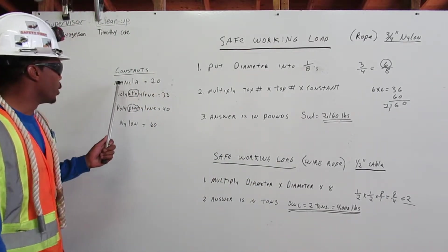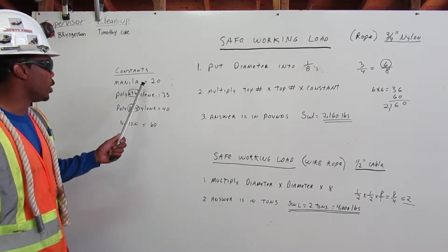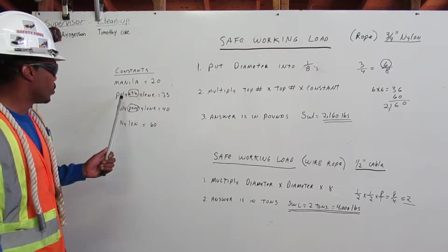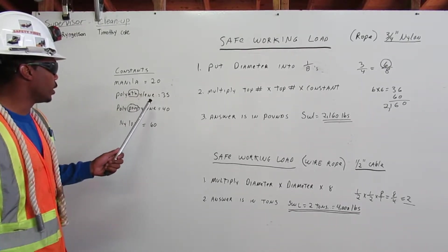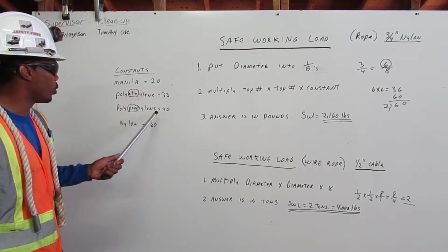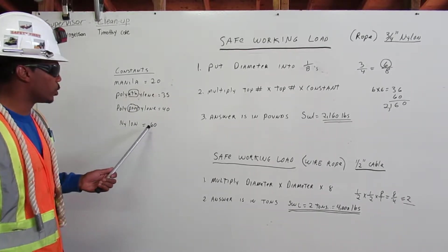Constants: manila equals 20, polyethane equals 35, polypropylene equals 40, nylon equals 60.